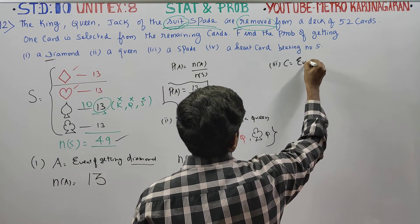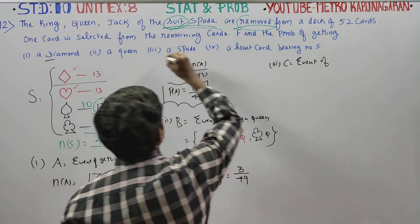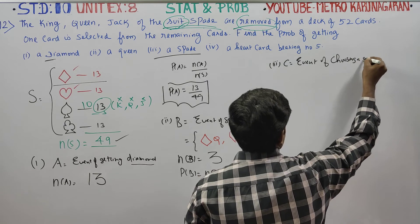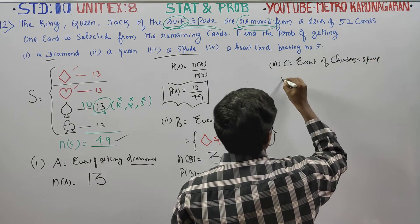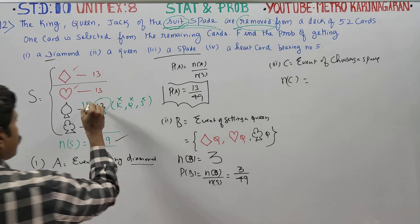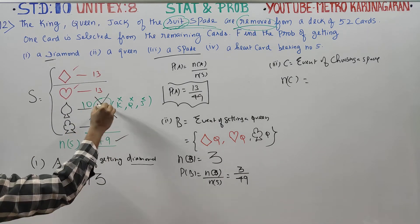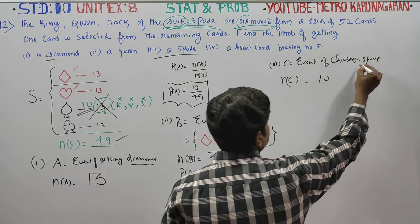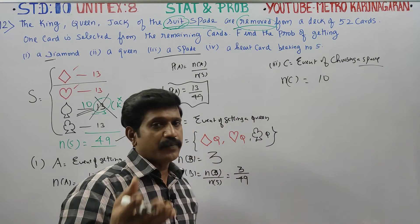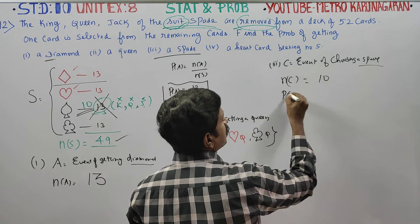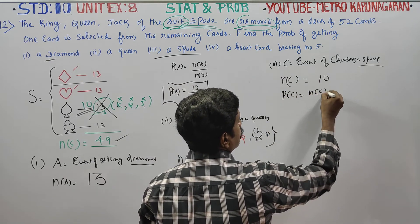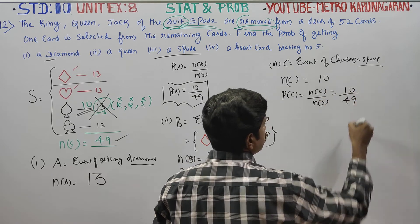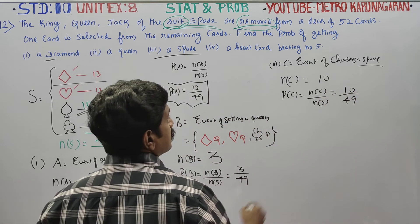Third question: Let C be the event of choosing a spade. Spade cards are 13, but 3 are already removed, so n of C is equal to 10. Probability of C is equal to n of C by n of S, which is 10 by 49.